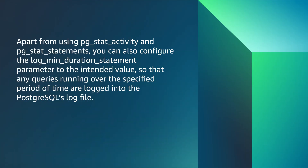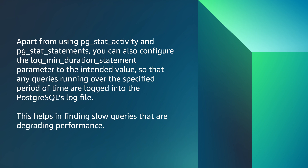Apart from using pg_stat_activity and pg_stat_statements, you can also configure the log_min_duration_statement parameter to an intended value so that any queries running over a specified period of time are logged into PostgreSQL's log file. This helps in finding slow queries that are degrading performance.